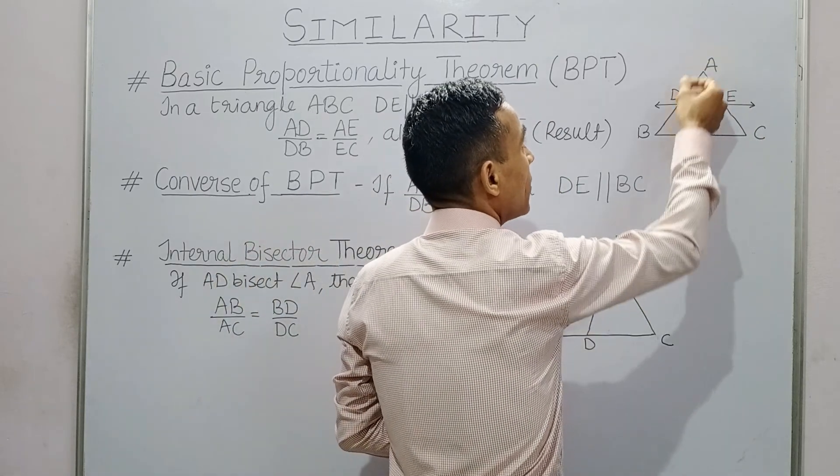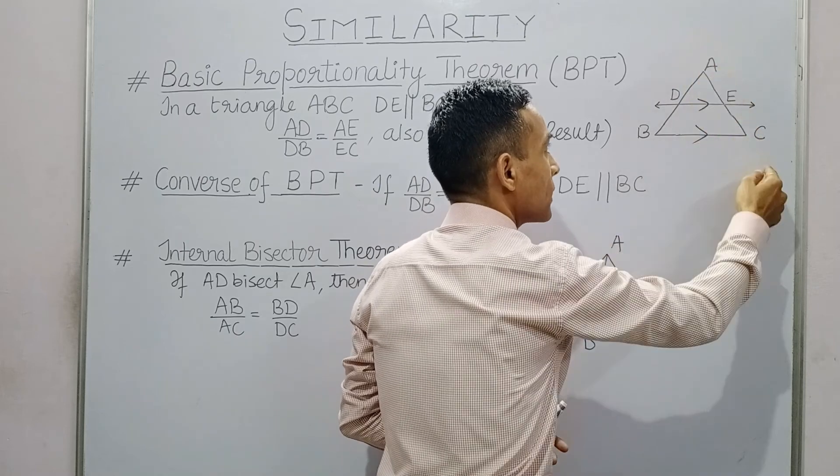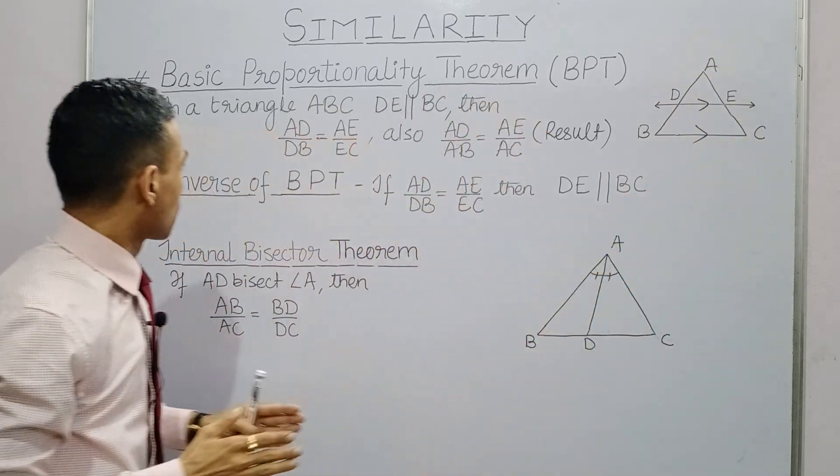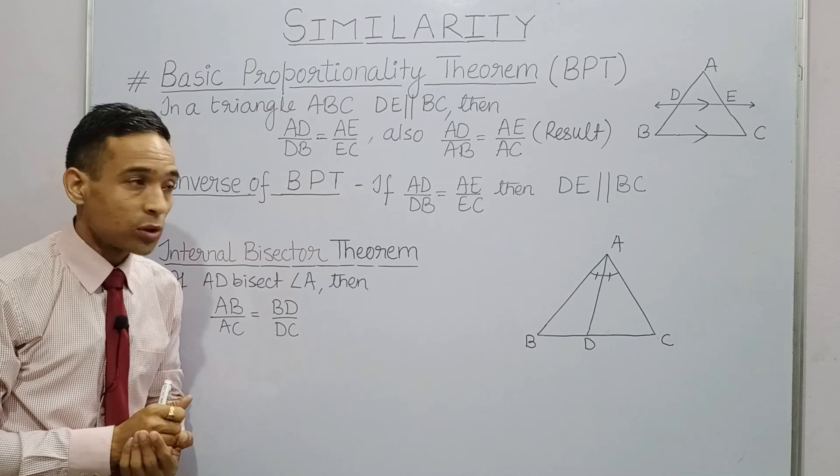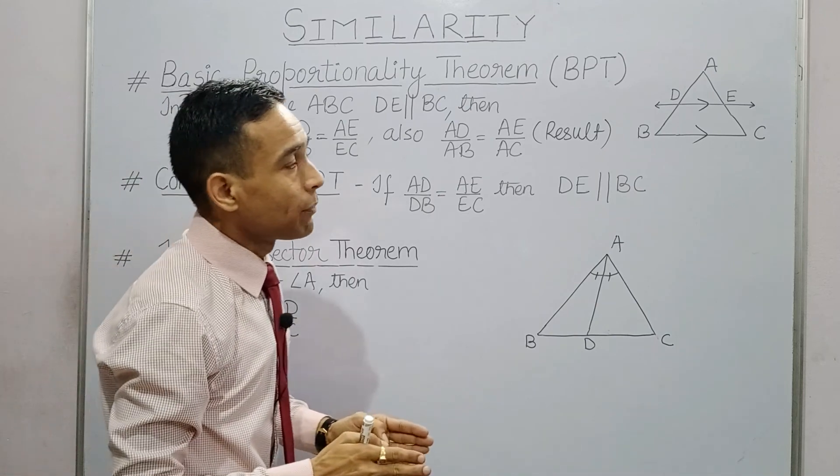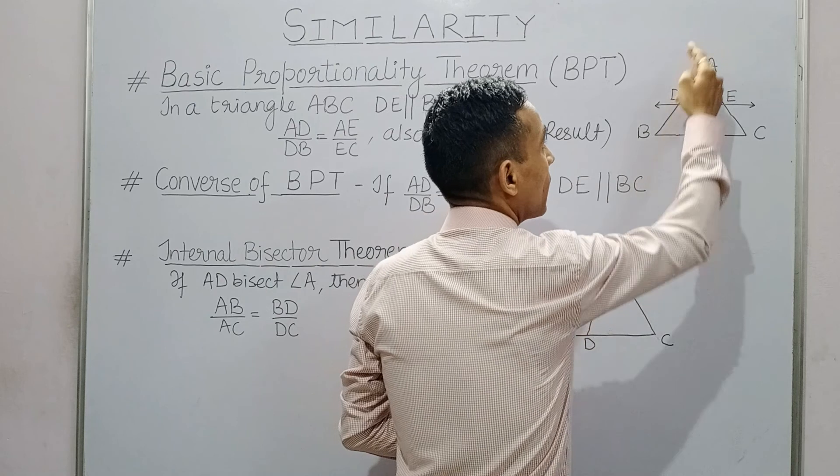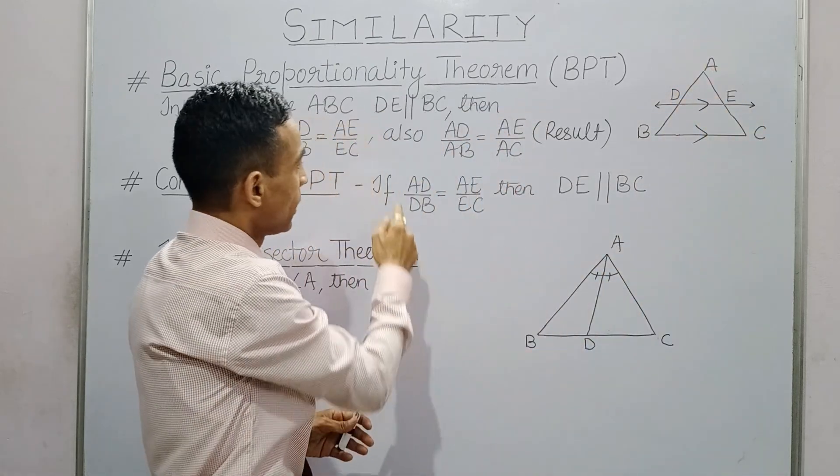We will use this result in one other way: AD upon AB is equal to AE upon AC. Now, the converse of BPT, Basic Proportionality Theorem: if we have a line DE that cuts the sides AB and AC in the same ratio, AD upon DB is equal to AE upon EC, then DE is parallel to BC.